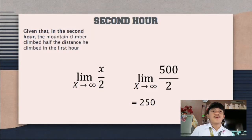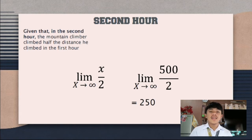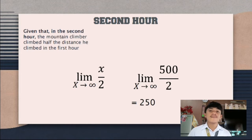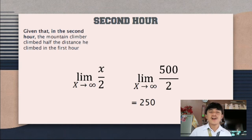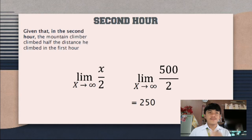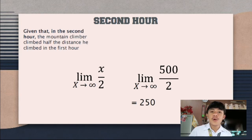Now we are going to solve for the second round. Given that in the second round, the mountain climber climbed half the distance he climbed in the first round, we are going to substitute x with 500, since 500 is the distance the mountain climber climbed in the first round. All we have to do is divide 500 by 2. So the answer will be 250. Therefore, the mountain climber was able to climb 250 meters high in the second round.